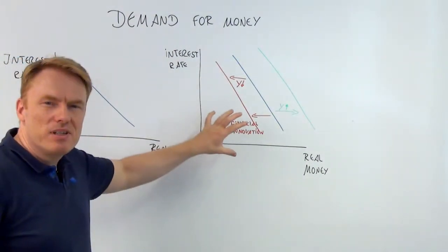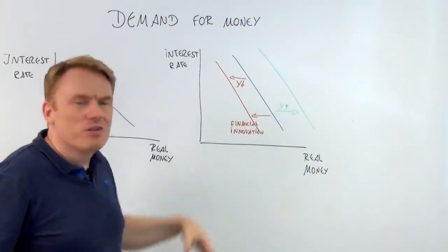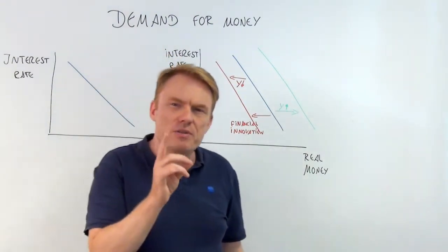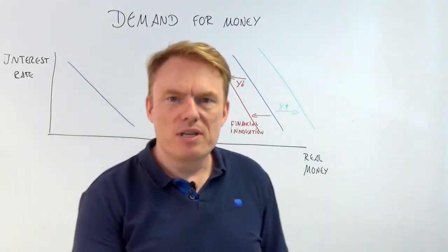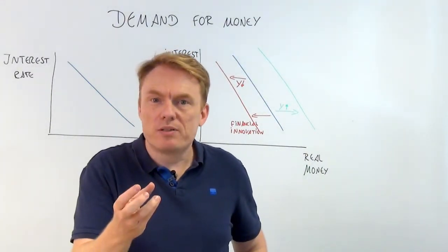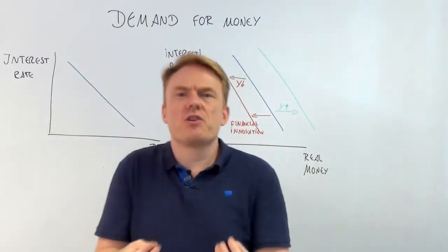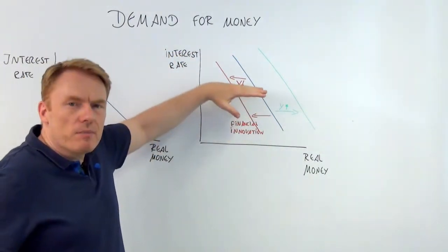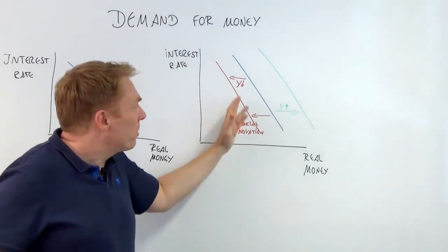What happens if real GDP rises? With the same interest rate, you'll want to have more currency with you. There is an important difference between income and demand for money — they are not the same. If I sell you something, I'm asking for income, not for money. The demand for money is simply the demand for having currency in your pocket.